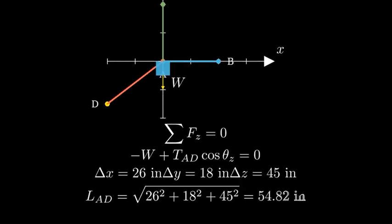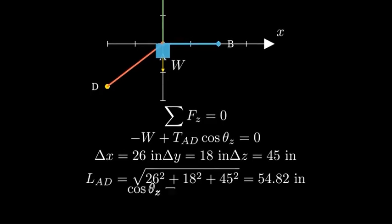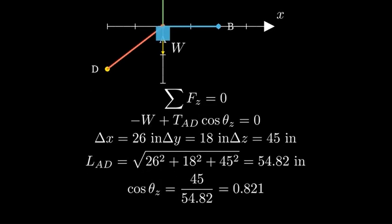Using the Pythagorean theorem in three dimensions, we can find the total length of cable AD. The vertical direction cosine is the ratio of the vertical component to the total length. This gives us 45 divided by 54.82, which equals 0.821.